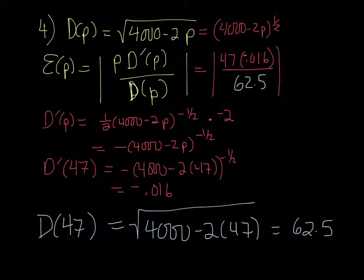So we can start filling this in. Our price is 47. D'(p) is -0.016. And then we need the function at 47. So that's the square root of 4,000 minus 2 times 47. So 4,000 minus 2 times 47 is the square root of 3,906, which is 62.5.